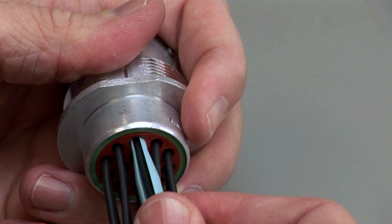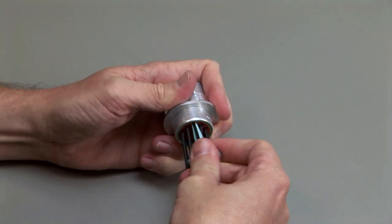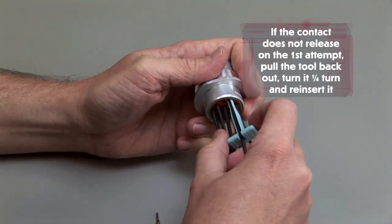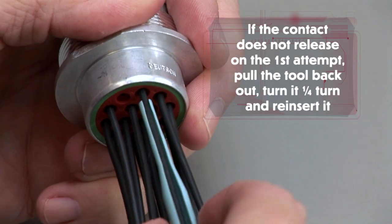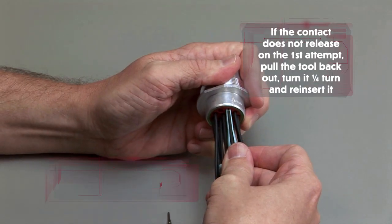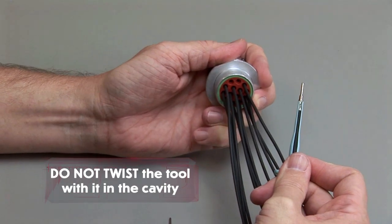Make sure you keep the tool straight and do not twist or angle the removal tool. Pull the contact and wire assembly out of the connector. If the contact does not release on the first attempt, pull the tool back out, turn it one quarter turn and reinsert it. Do not twist the tool with it in the cavity.